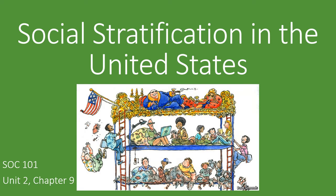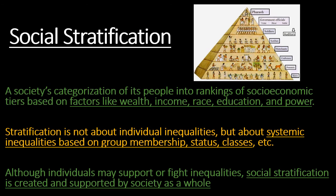Hello class! This week we're going to go over chapter 9 from the textbook and we'll be talking about social stratification in the United States. Another term for social stratification is social inequality. Stratification refers to the way that societies split up populations into different groupings, usually in some sort of hierarchical order.